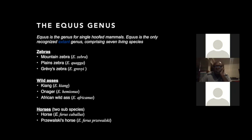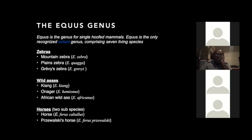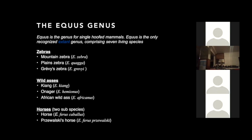The three zebra species are the Grévy's zebra, mountain zebra, and plains zebra. Another subgenus is Asinus, which contains the wild asses: the kiang, the onager (also called the Asiatic wild ass), and the African wild ass — donkeys fall under the African wild ass whether domesticated or not. The third subgenus is Ferus, consisting of the horses, with one species split into two subspecies: Equus ferus caballus and Equus ferus przewalskii.